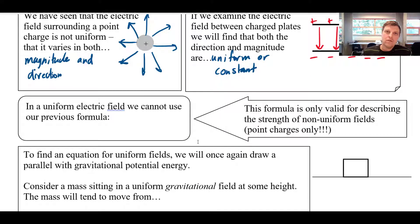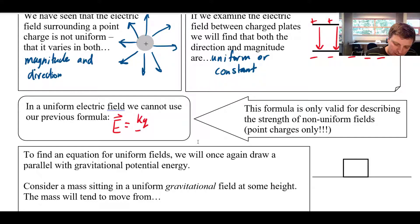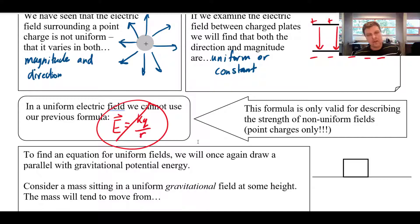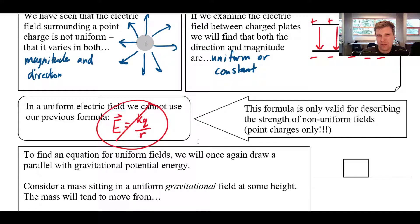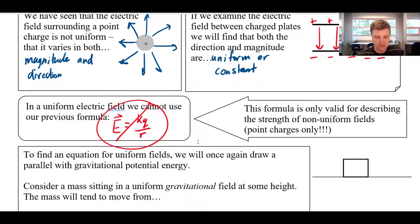In a uniform electric field, you cannot use the formula E = KQ/R². That's a big no-no, because that formula only works for point charges. Q literally means a point charge, and R is the separation from a point charge — it's not, for example, how far apart the plates are. So that's not going to work; we need something different.